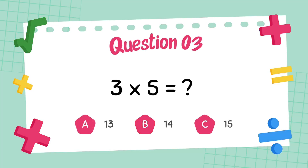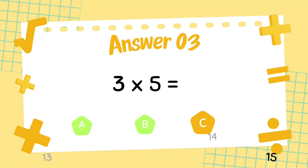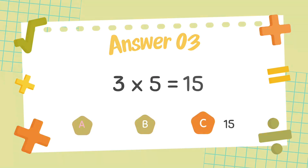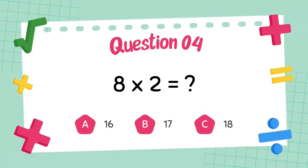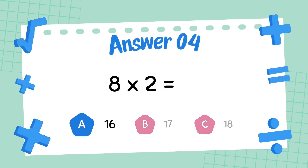What does 3 multiply 5? The answer is 15. What does 8 multiply 2? The answer is 16.